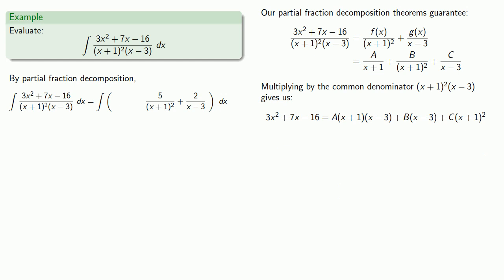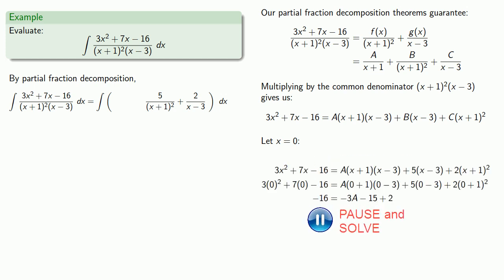Now, there's no other value of x that will make two of our three terms drop out, but we can pick any value of x that we want. So, how about x = 0? We'll substitute, then solve our equation, which gives us A = 1.